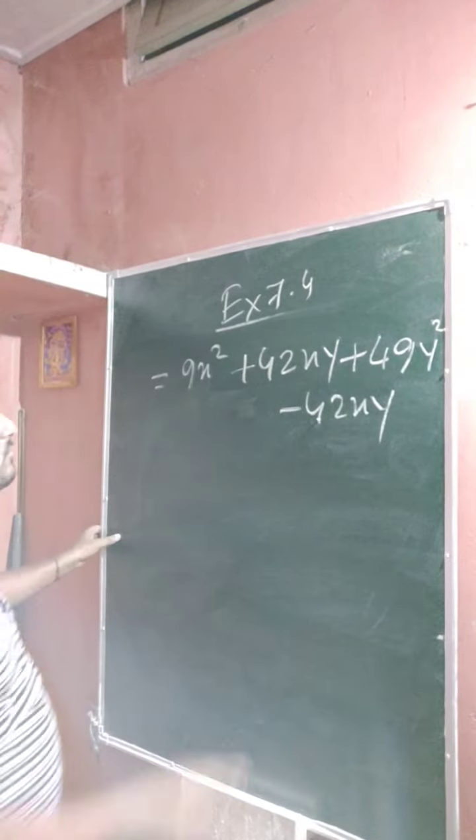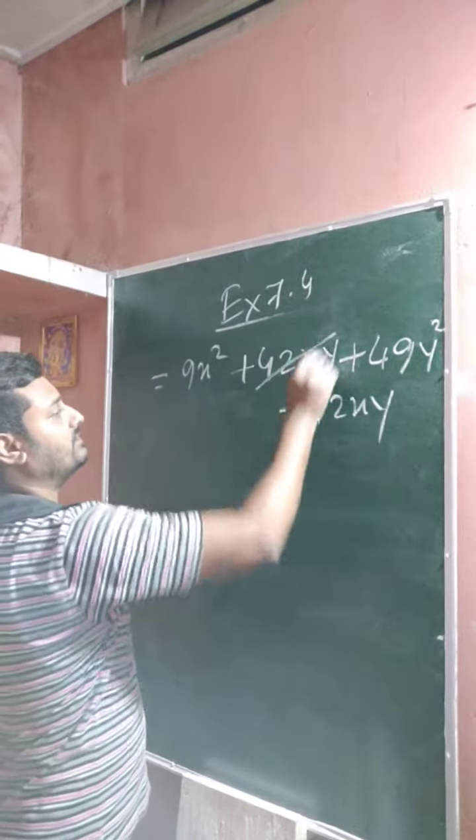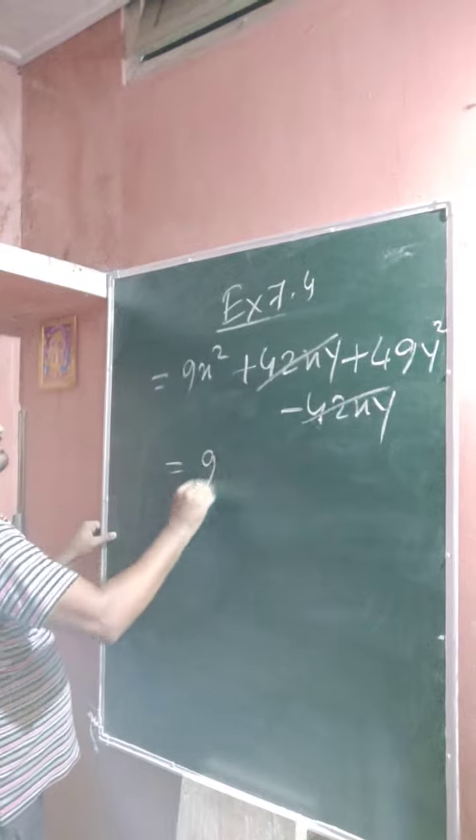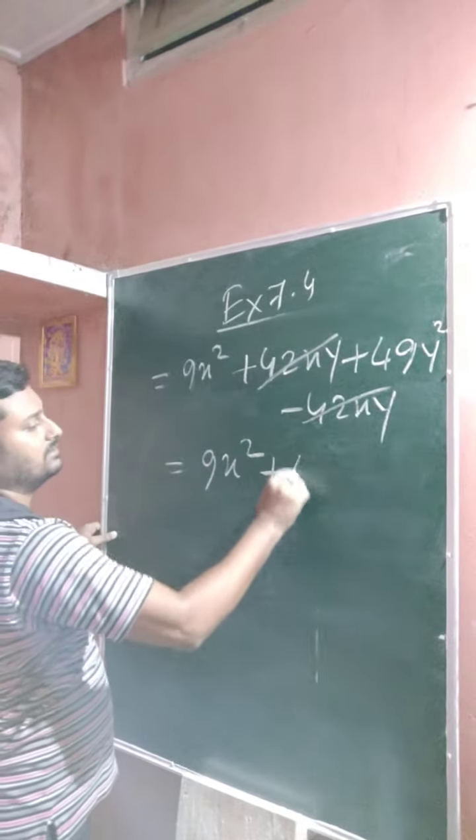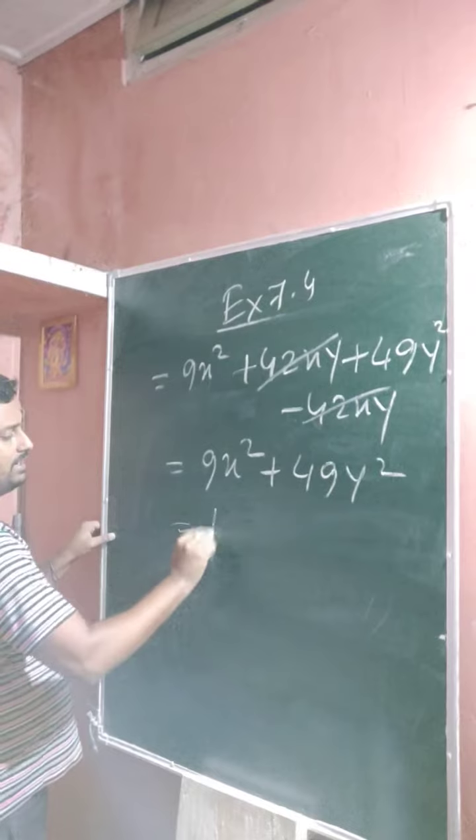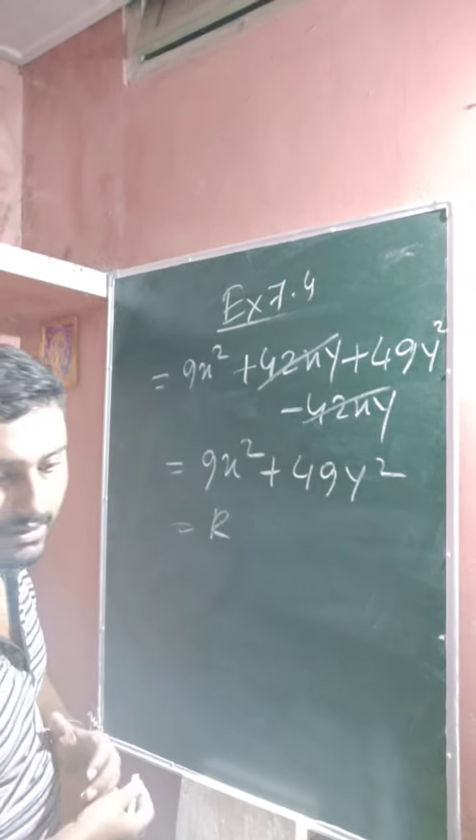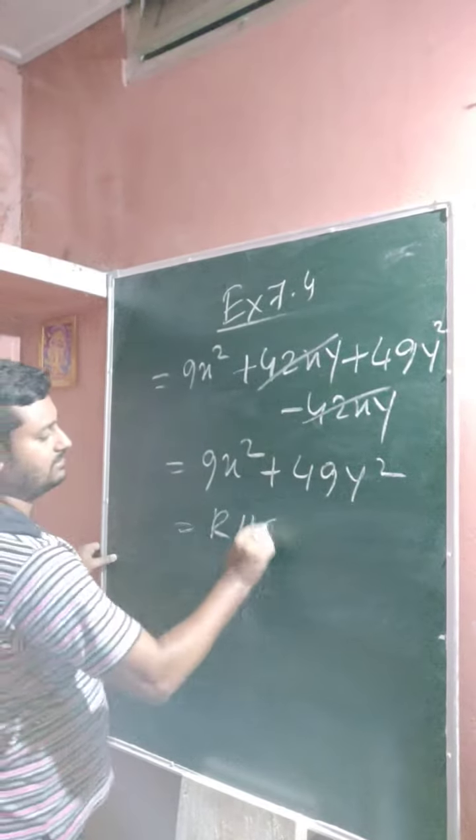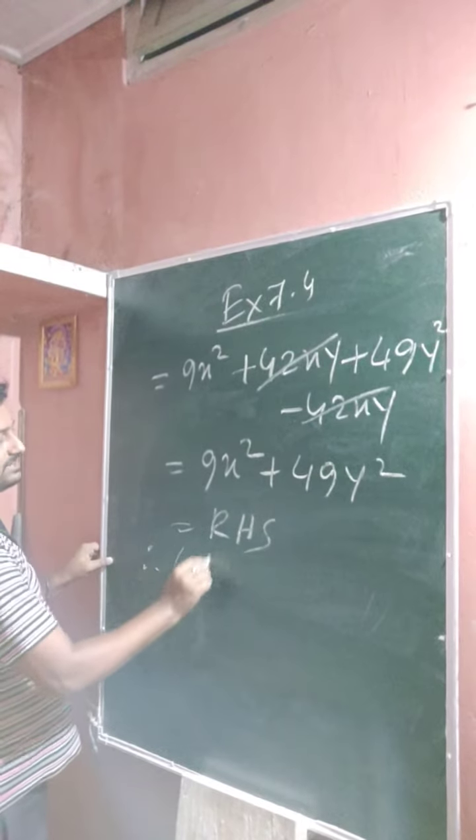So look at this: minus 42xy negative here, positive here, so the remaining is 9x square plus 49y square. And look at the question, that is the right hand side. So therefore the left hand side equals right hand side.